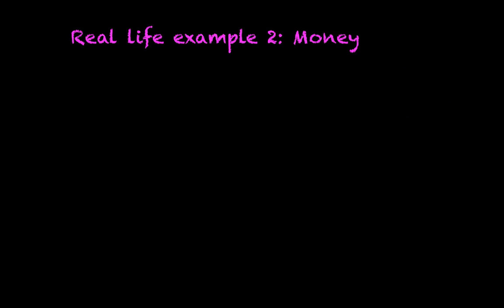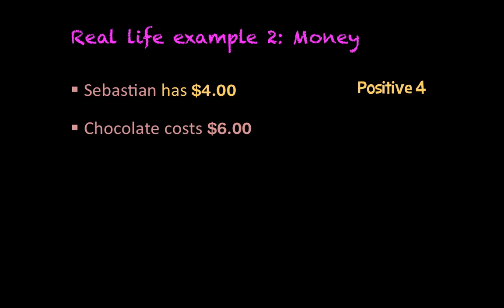Next real-life example, we're looking at money. Now, Sebastian has four dollars, so we can say that Sebastian has positive four. When Sebastian goes to school in the school's cafeteria, he sees a chocolate that he wants, but that chocolate costs six dollars. So of course Sebastian doesn't have the money to buy the chocolate, but he really wants it. Luckily for him, his cousin Kyra also goes to that school, and Kyra loans Sebastian two dollars.